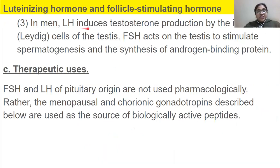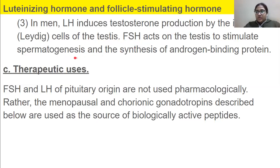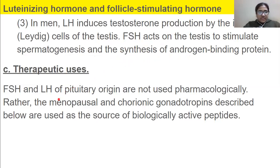In men, LH induces testosterone production by the interstitial Leydig cells of the testes. FSH acts on the testes to stimulate spermatogenesis — production of sperm — and the synthesis of androgen binding proteins. Overall, these hormones promote the male reproductive system. FSH and LH of pituitary origin are not used pharmacologically; rather, menopausal and chorionic gonadotropins are used as sources of biologically active peptides.